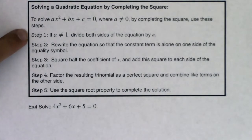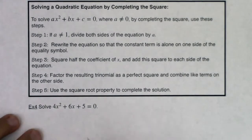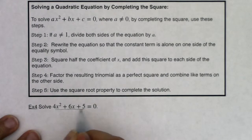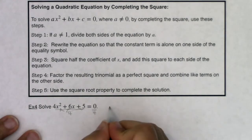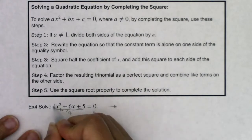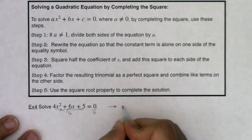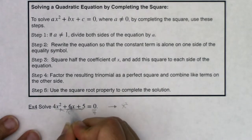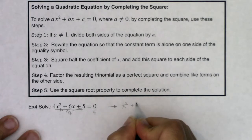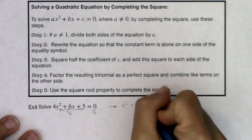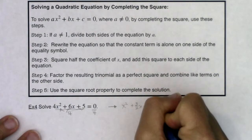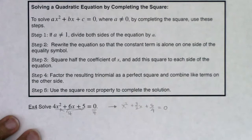Step 1 says if a doesn't equal 1, divide both sides of the equation by a. Let's go ahead and do that — I'm going to divide both sides of this equation by 4. So my equation now: 4x squared over 4 is x squared, 6x over 4 is 3 halves x, and 5 over 4 is just 5 fourths, equal to 0.